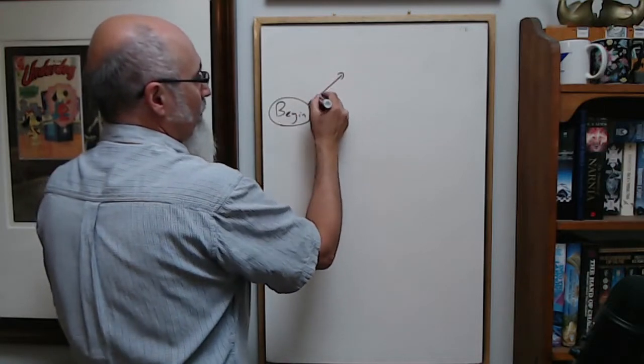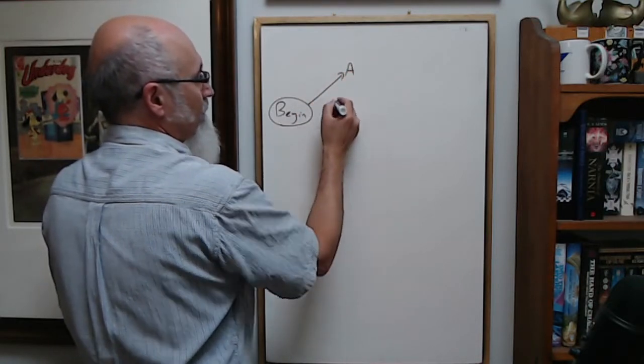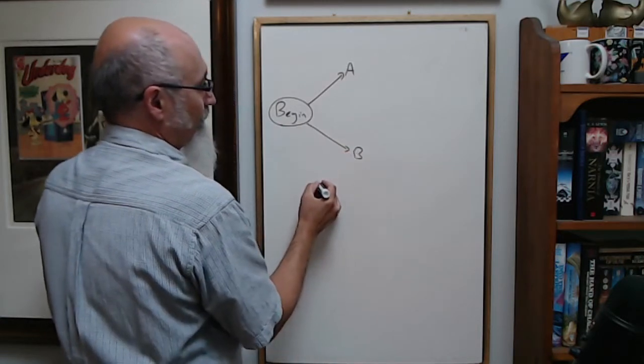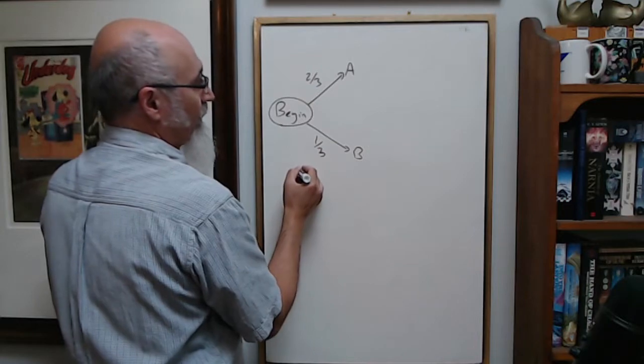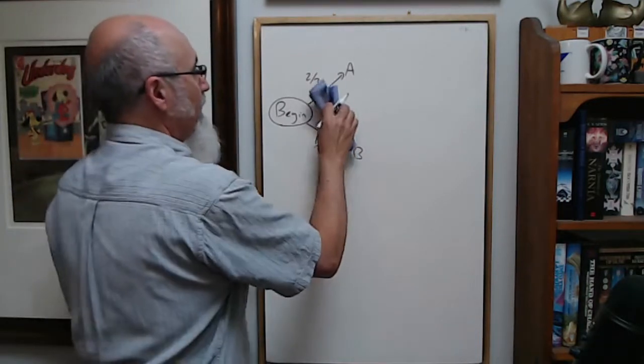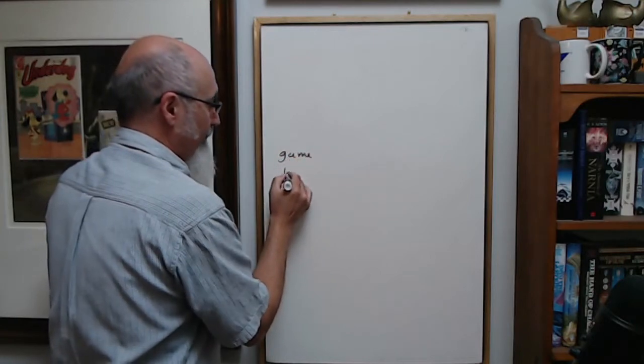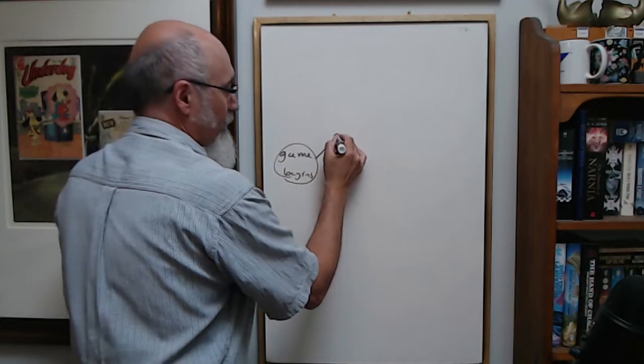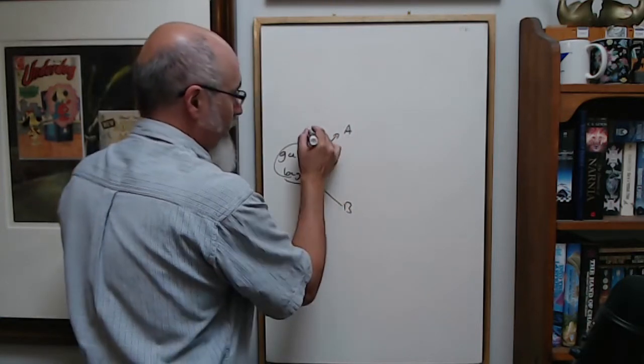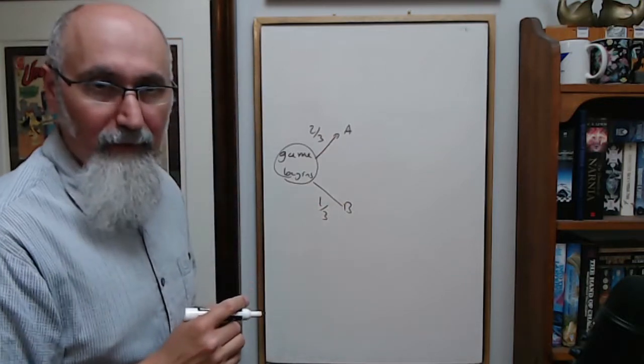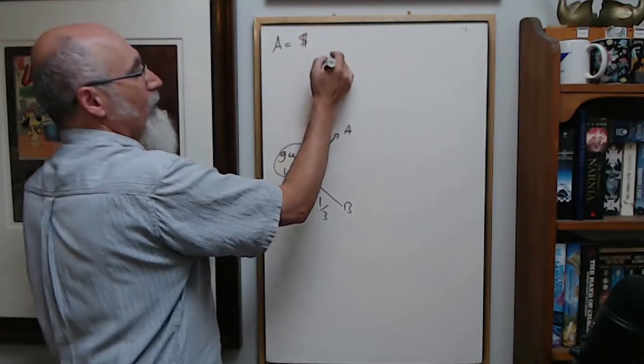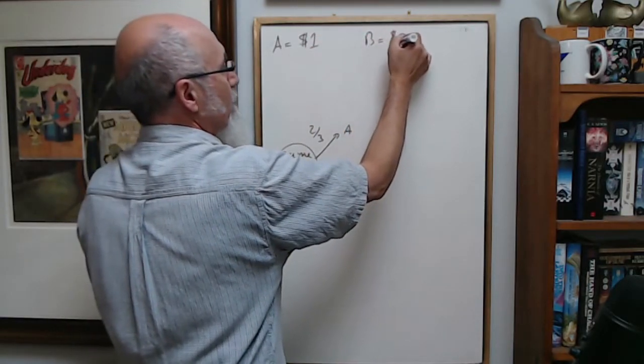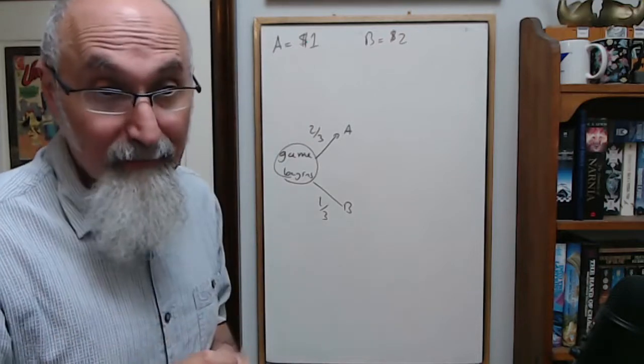So here's the game begin. If A wins, and B wins, the probability of A winning is 2 out of 3, the probability of B winning is 1 out of 3. Let me put this in the center. Game begins. We got A and we got B, two-thirds probability of winning, one-third probability of winning.